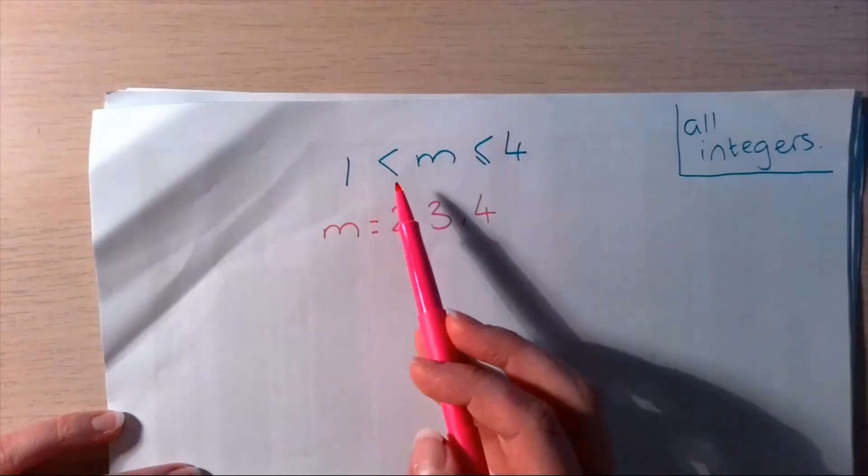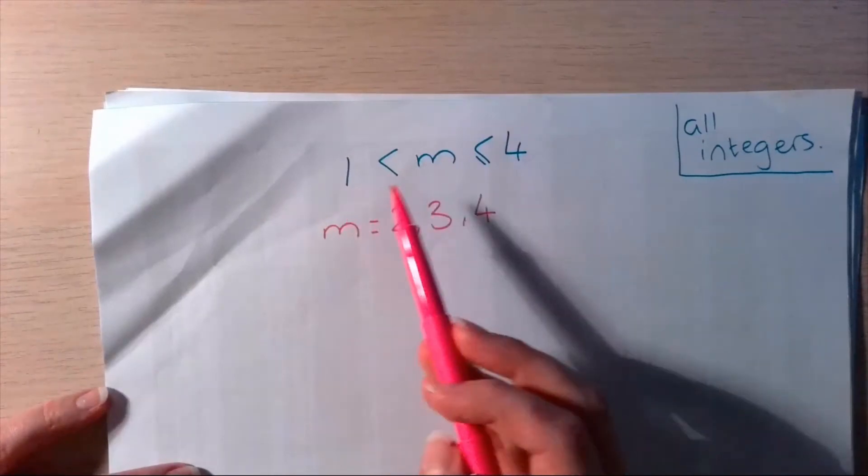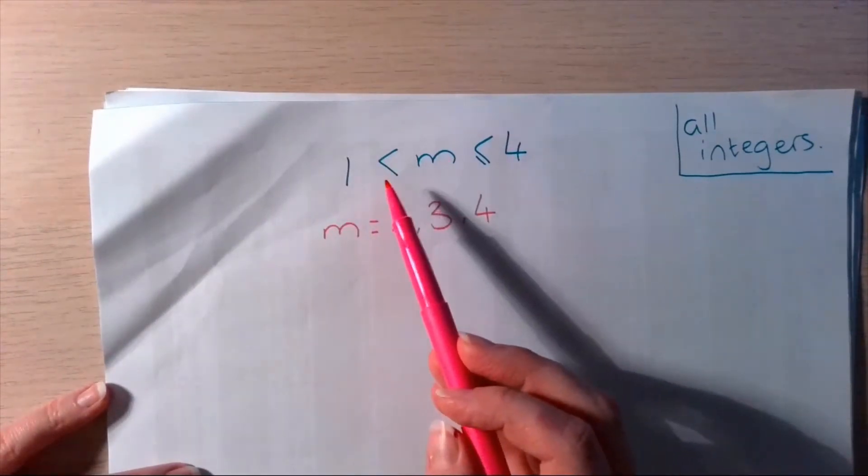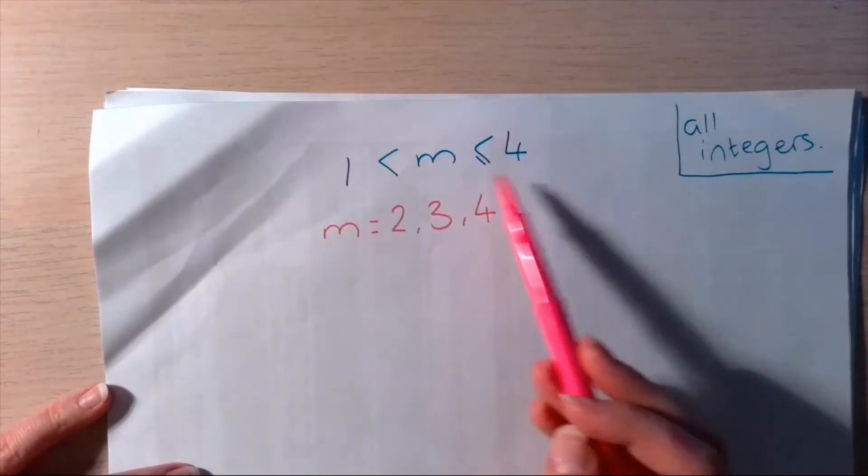So, this here where it doesn't have the equal sign, this is just, we call it strictly greater than or strictly less than, depending on which way it's pointing. Means it has to be bigger. It doesn't include this number. But, if there's equal sign, it does include the number.